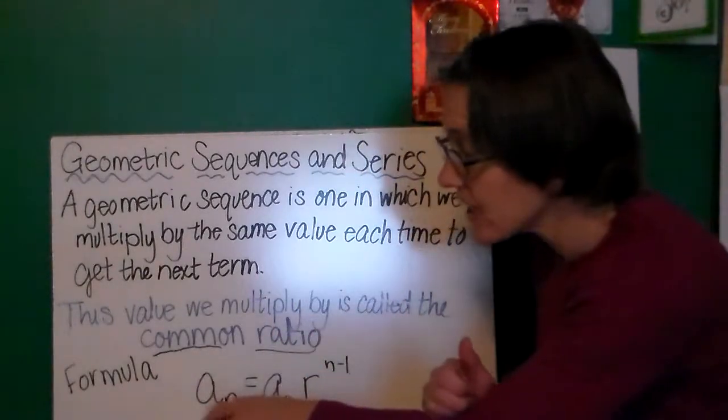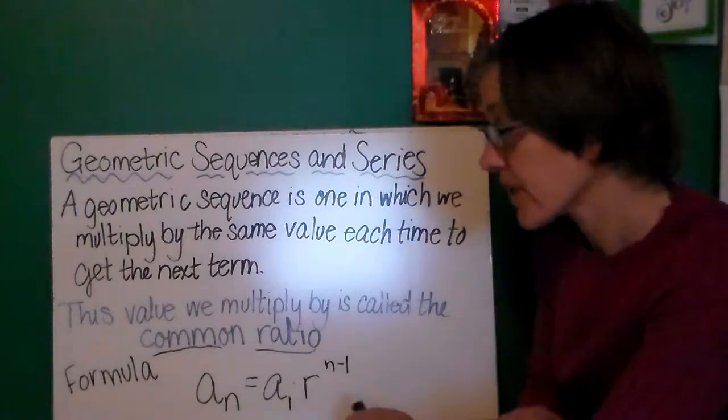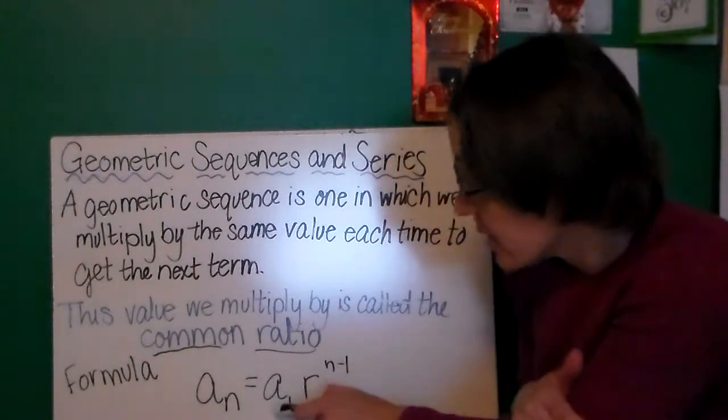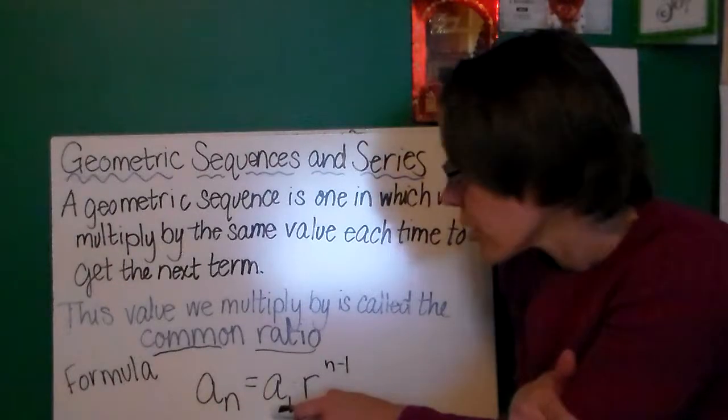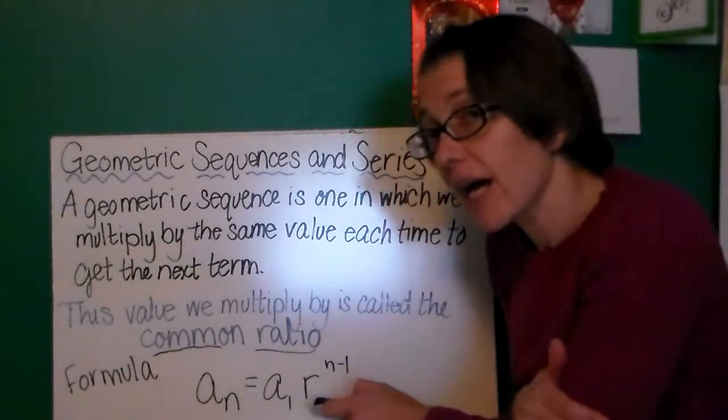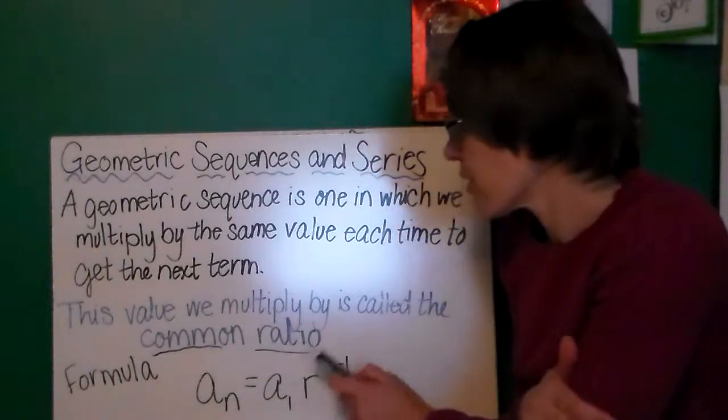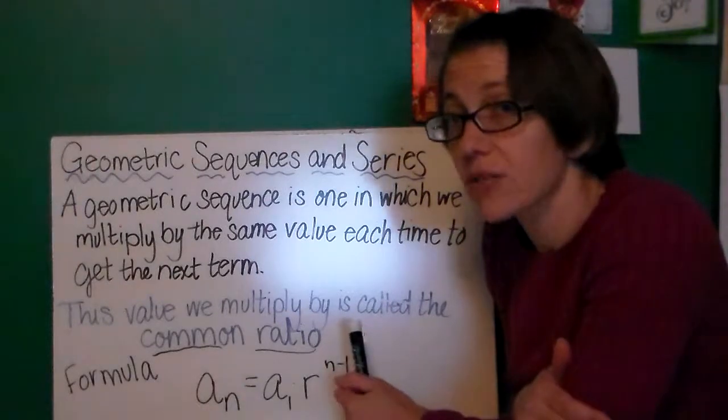Remember, the formula for a geometric series, if you want to find any term, a_n, then you can take the first term and multiply it by the common ratio raised to the n minus 1 power.